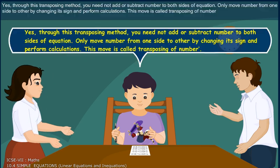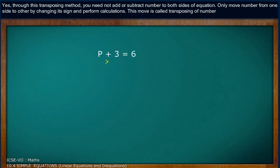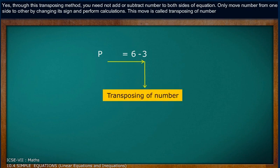Through this transposing method, you need not add or subtract numbers to both sides of the equation. Only move a number from one side to the other by changing its sign and perform calculations. This move is called transposing of a number.